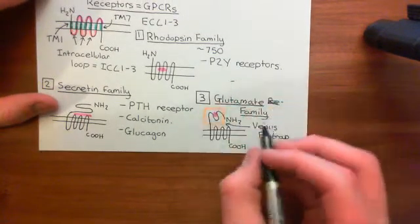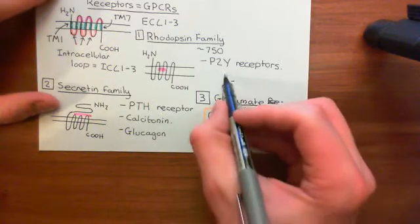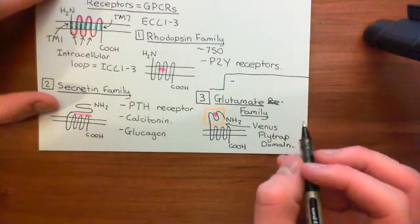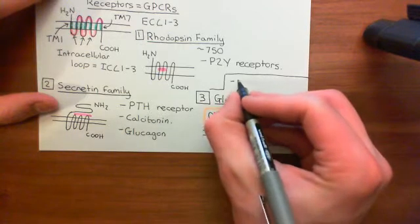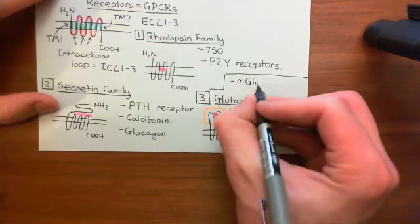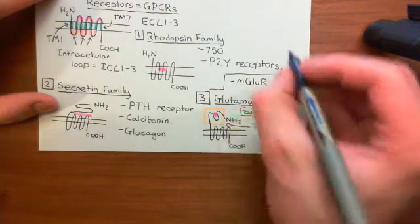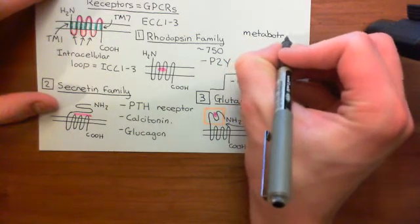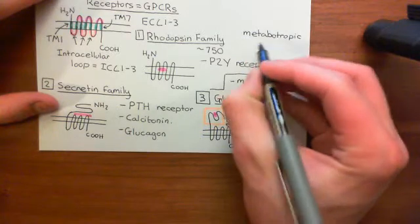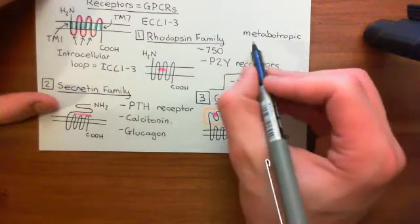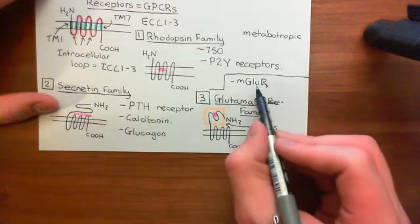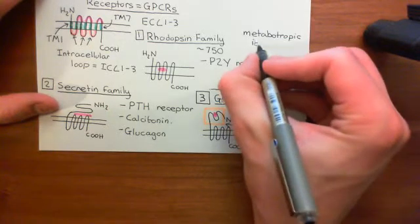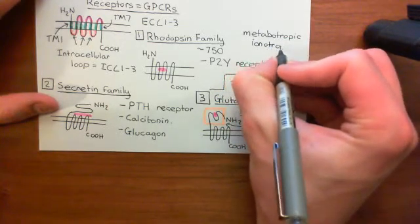The major members of the glutamate family are the metabotropic glutamate receptors, often abbreviated to mGluRs. The 'metabotropic' designation is another way of saying they are G-protein coupled receptors. So metabotropic glutamate receptors are receptors for glutamate that are G-protein coupled receptors, as contrasted with ionotropic receptors, which are ligand-gated ion channels.